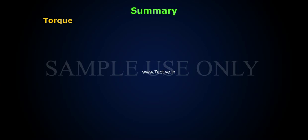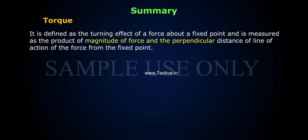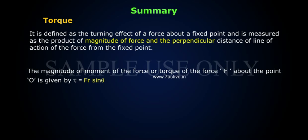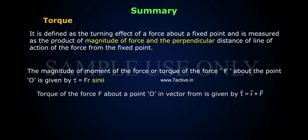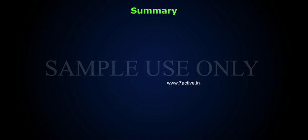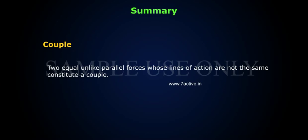Summary. Torque: It is defined as the turning effect of a force about a fixed point and is measured as the product of the magnitude of force and the perpendicular distance of the line of action of the force from the fixed point. The magnitude of the torque of force F about point O is given by τ equals F R sin θ. The torque in vector form is given by τ equals R cross F. Couple: Two equal, unlike parallel forces whose lines of action are not the same constitute a couple.